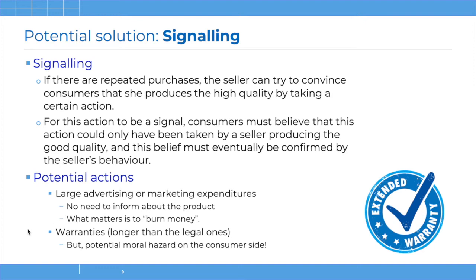Such an expensive advertising campaign signals quality because only high quality producers who can secure high profits in the long run — by being recognized as high quality producers — can afford this kind of very expensive advertising. The same argument applies to guarantees. Above legally required warranties, sellers may decide to spend money offering extended warranties. As this is perceived as costly by consumers, they will figure out that only a high quality seller would actually afford an extended warranty, because low quality sellers would eventually have to pay out on those warranties and lose money. So signaling may be a way for high quality producers to convince consumers they do indeed produce high quality, but they need to incur some costly investment to realize this.